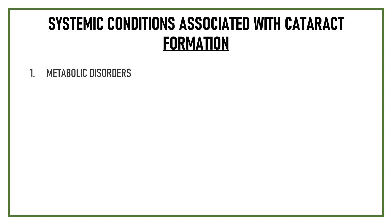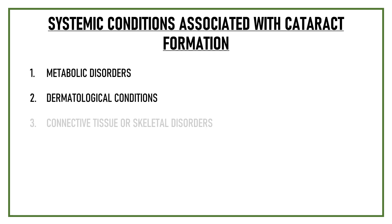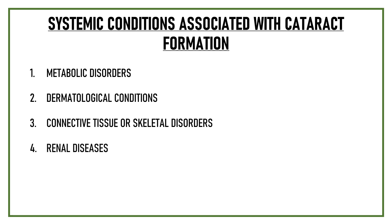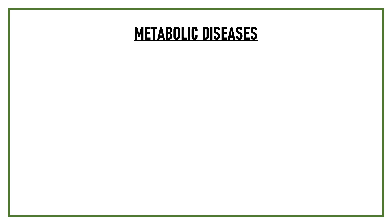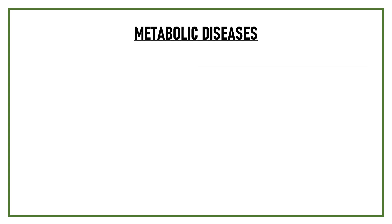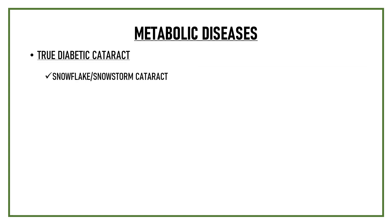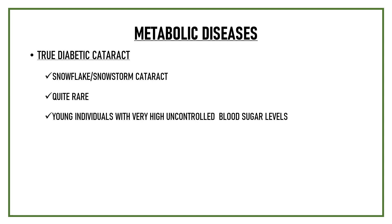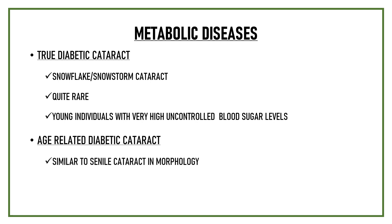Many systemic conditions are also associated with cataract formation, divided into five broad categories: metabolic disorders, dermatological conditions, connective tissue or skeletal disorders, renal diseases, and CNS diseases. The first metabolic disease is diabetes, which hastens the process of cataract formation. True diabetic cataract is known as a snowflake or snowstorm cataract — quite rare, mostly occurring in young individuals with very high uncontrolled blood sugar. The second type seen in diabetics is age-related diabetic cataract, similar to senile cataract in morphology but with earlier onset and faster progression.